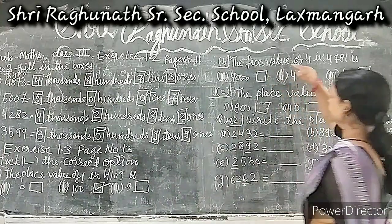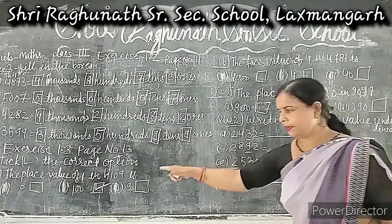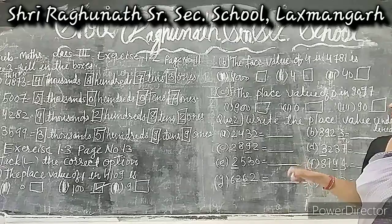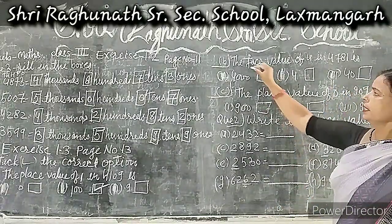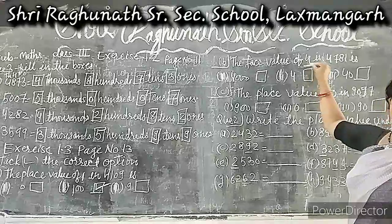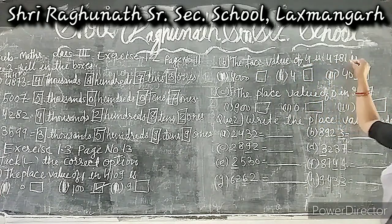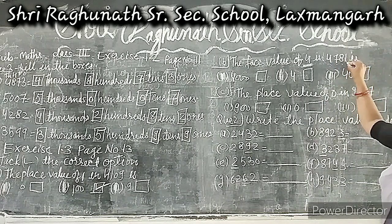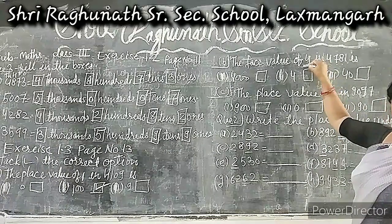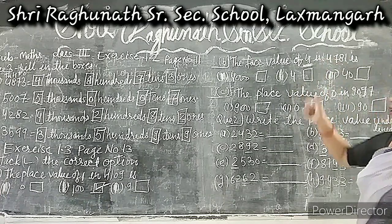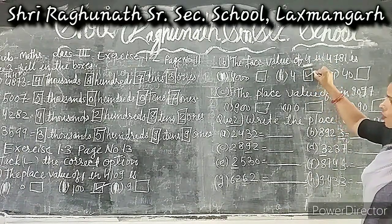Second question: the place value of 4 in 4,781. Place value is determined by whichever place the number occupies. The place value of 4 in 4,781 — we are being asked about 4. The face value of 4: whichever number we are facing is 4, so the face value of 4 is also 4.